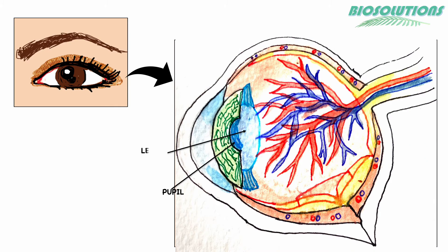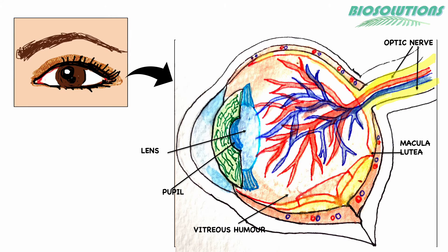The pupil is a hole in the choroid allowing light to enter, whereas the iris contracts and dilates to accommodate the light intensity. Lens shape is controlled by the ciliary muscles. The retina has specialized types of neurons called photoreceptors.